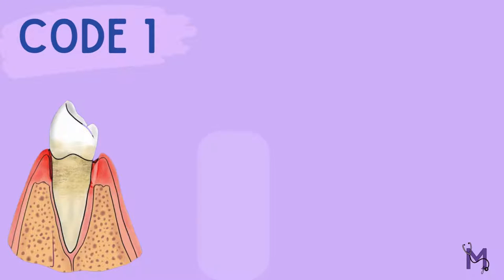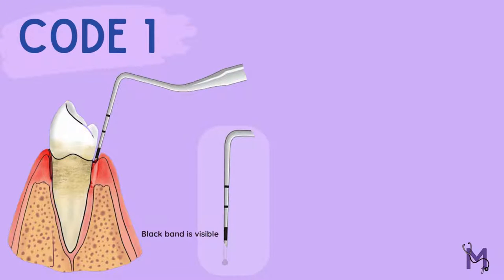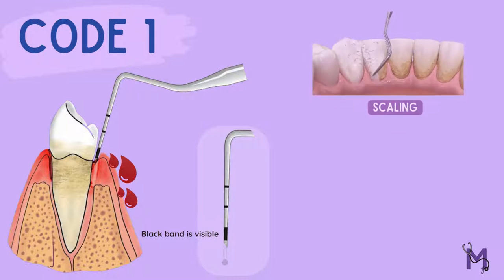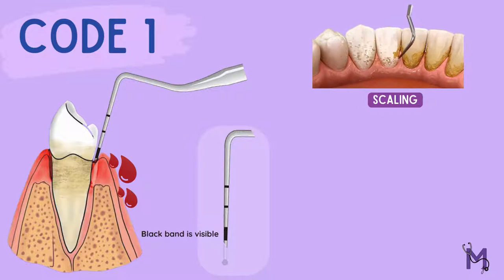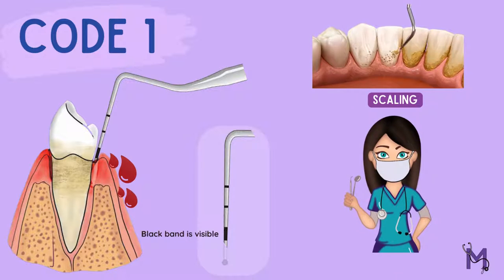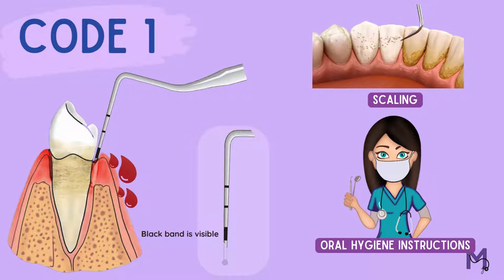A score of code 1 is given when the whole of the black band is visible, accompanied by bleeding on probing. The treatment here would include a thorough supra-gingival and sub-gingival scaling, along with instructing the patient about the various methods of maintaining good oral hygiene.